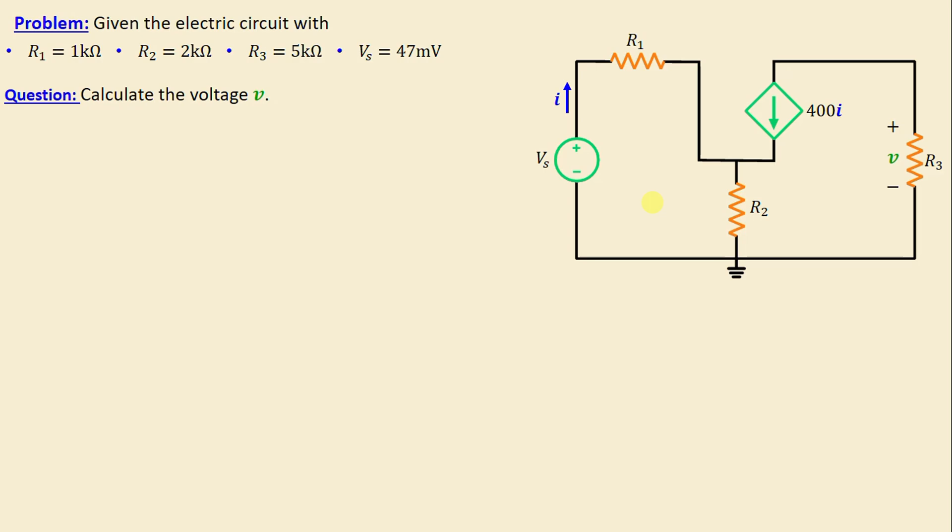Additionally, we can observe the presence of a dependent source, especially a current-controlled current source. The question now is to calculate the voltage v.